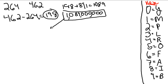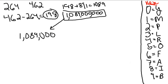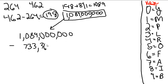And this number is going to be subtracted from this very big number. So with this number, it's 1,089,000,000. You are going to rewrite it again, so we've got to get all of those digits down here. And then you're going to subtract 733,361,573.